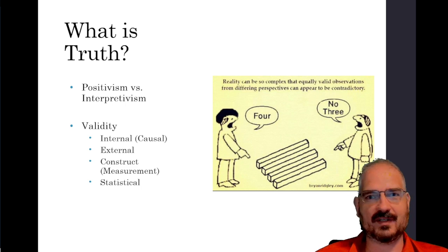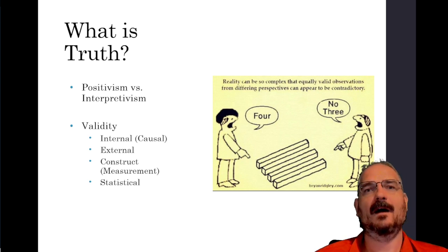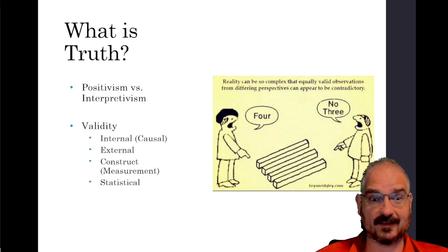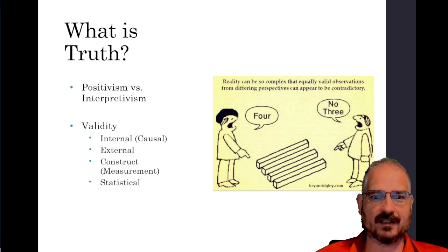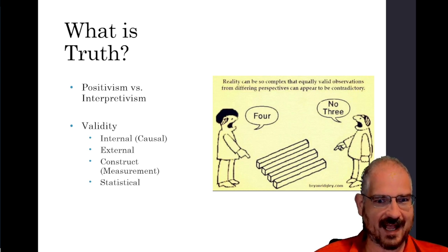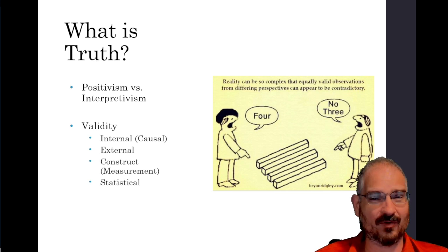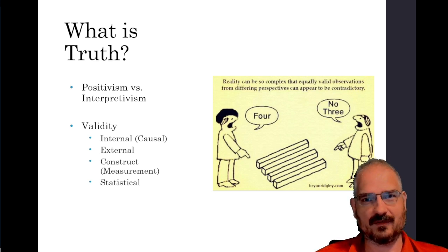Statistical validity basically boils down to whether you're using proper statistical techniques and whether they're doing what you think they're doing — we'll leave that for a statistics course. Internal validity is essentially: if you find a correlation between two variables, is that actually reflecting reality? Is X causing Y, or is there some other reason why X and Y might appear related in your data? External validity is the simplest of the three we'll cover: do the conclusions you're drawing from your study and sample translate and equally apply to other people, places, and times?